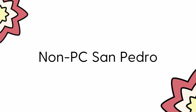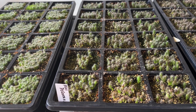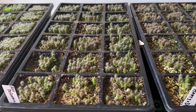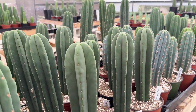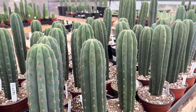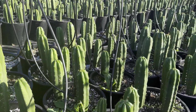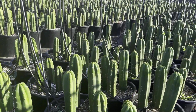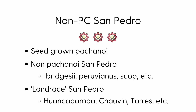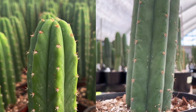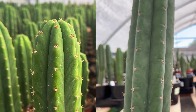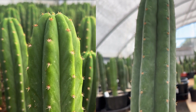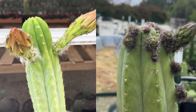Now that we know how to identify PC San Pedro, what are considered non-PC? Non-PC San Pedro are any pachanoi that are seed grown, other Trichocereus species such as Bridgesae, Peruvianus, or Scapulacola, including hybrids, and landrace varieties of San Pedro such as Wonkabamba and Chauvin de Hunter. The best characteristics to assess as non-PC are going to be prominent V-notching, differences in spine color, spine length, and ultimately flower morphology.